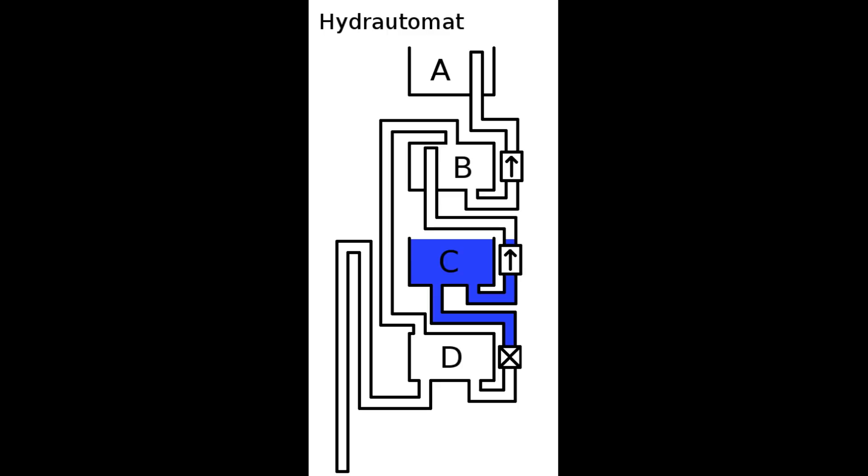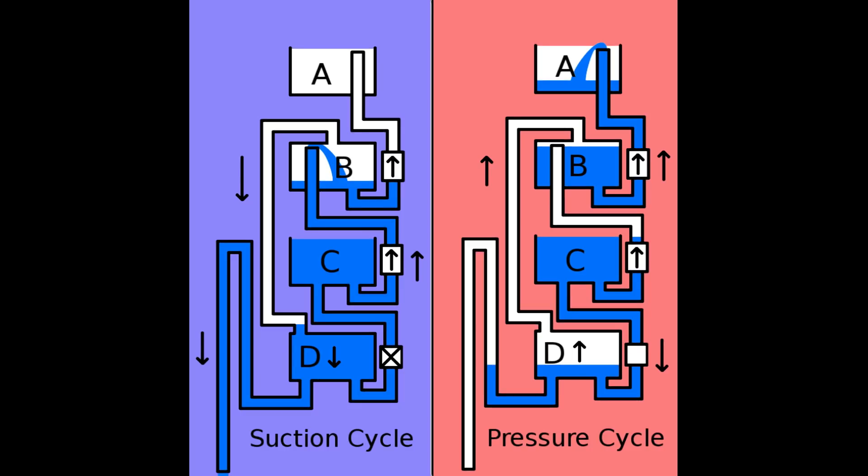The hydronomat works by filling a container known as the feed tank, or C as it's shown on the diagram, with water from a stream or another water source. This water is then fed into a tank known as the operating tank, or D, which is designed to work like a piston when it is filled or drained.